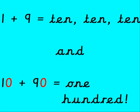1 add 9 makes 10, 10, 10, and 10 add 90 is 100.